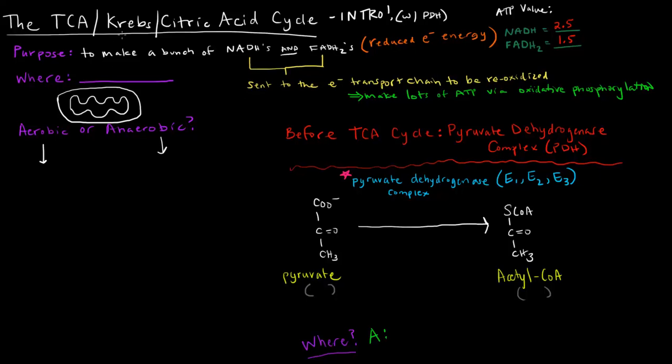So where does the TCA cycle even occur? It occurs in the mitochondrial matrix. So where is that? If you think about a mitochondrion, you've probably seen this sort of diagram before. The matrix is right in there. Anything that's bound by this inner membrane here.